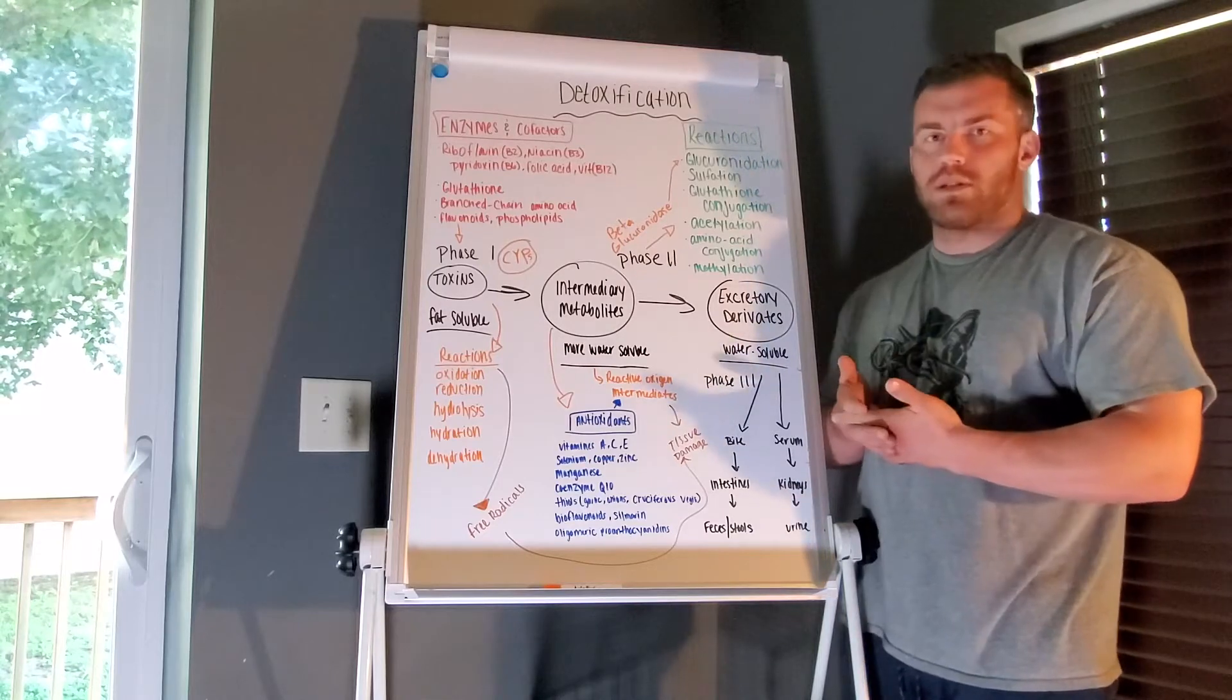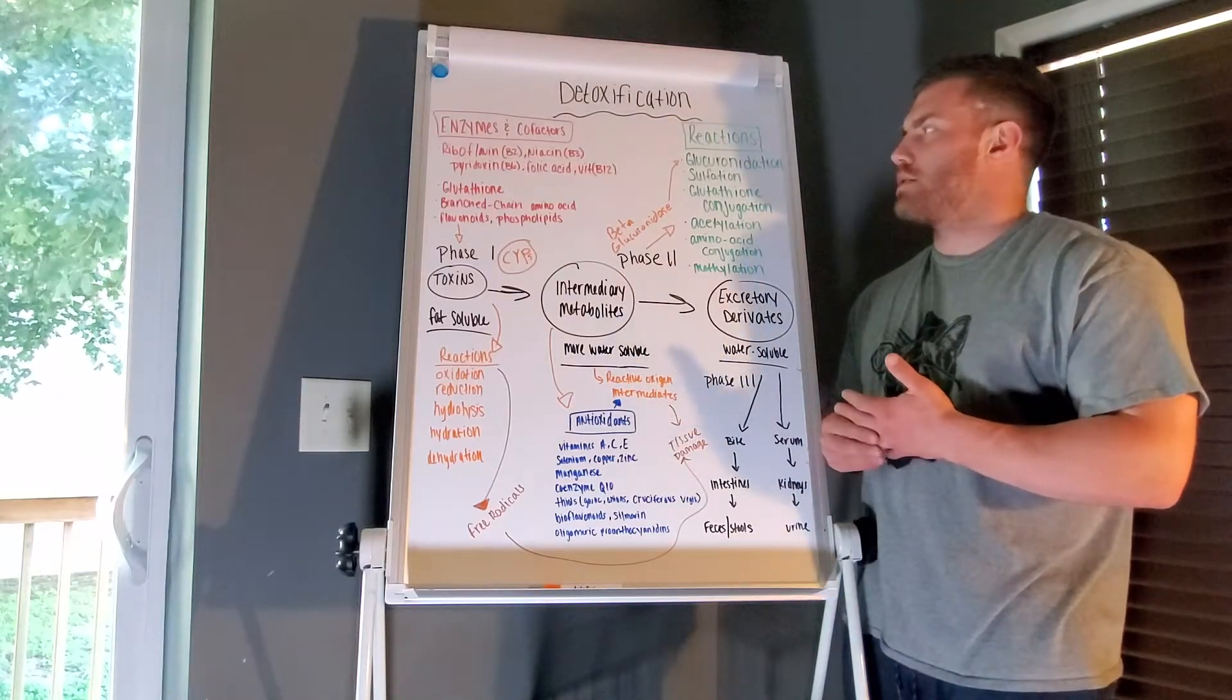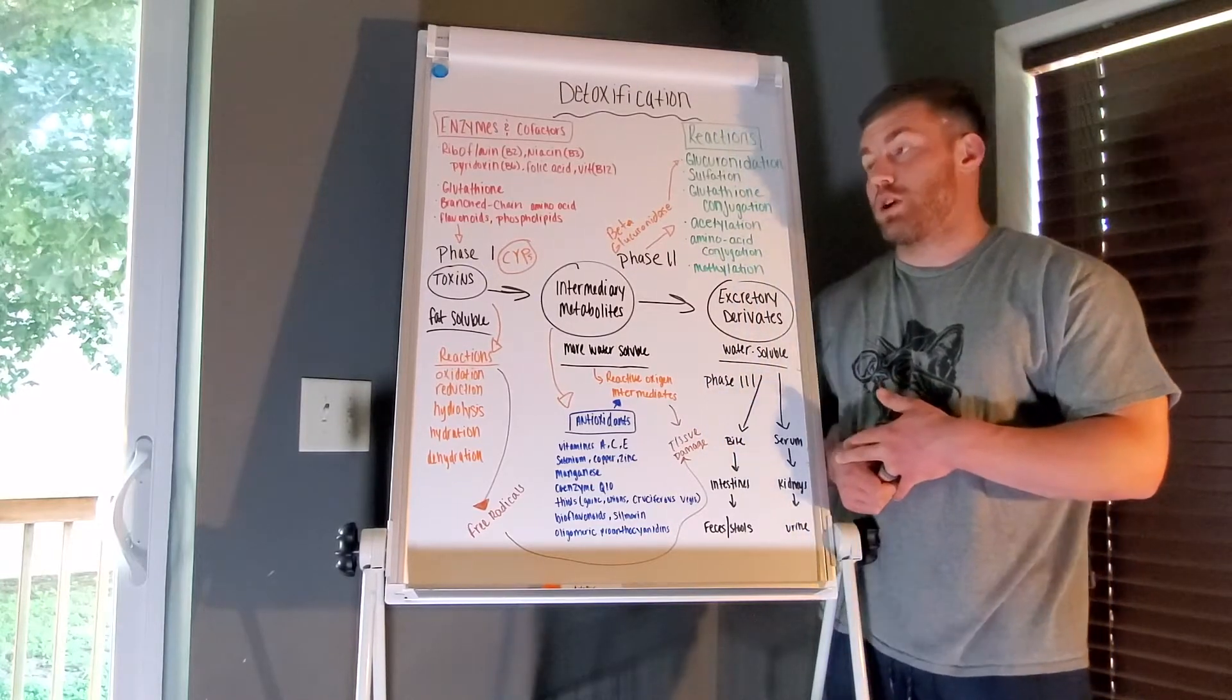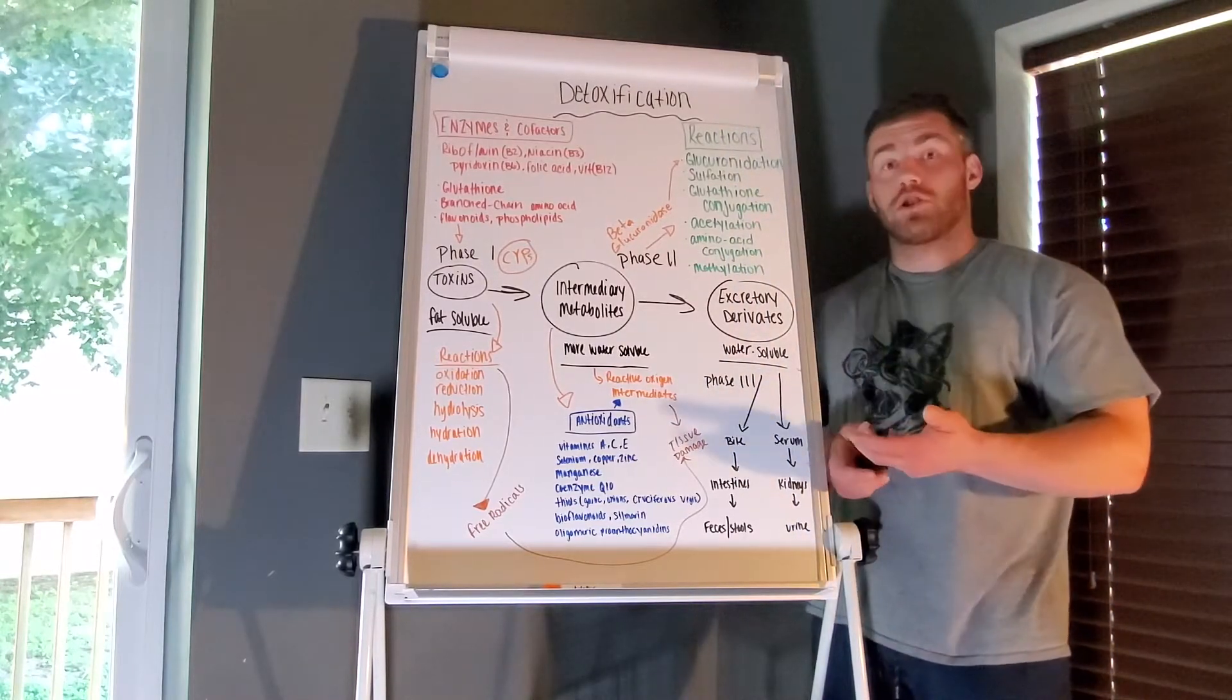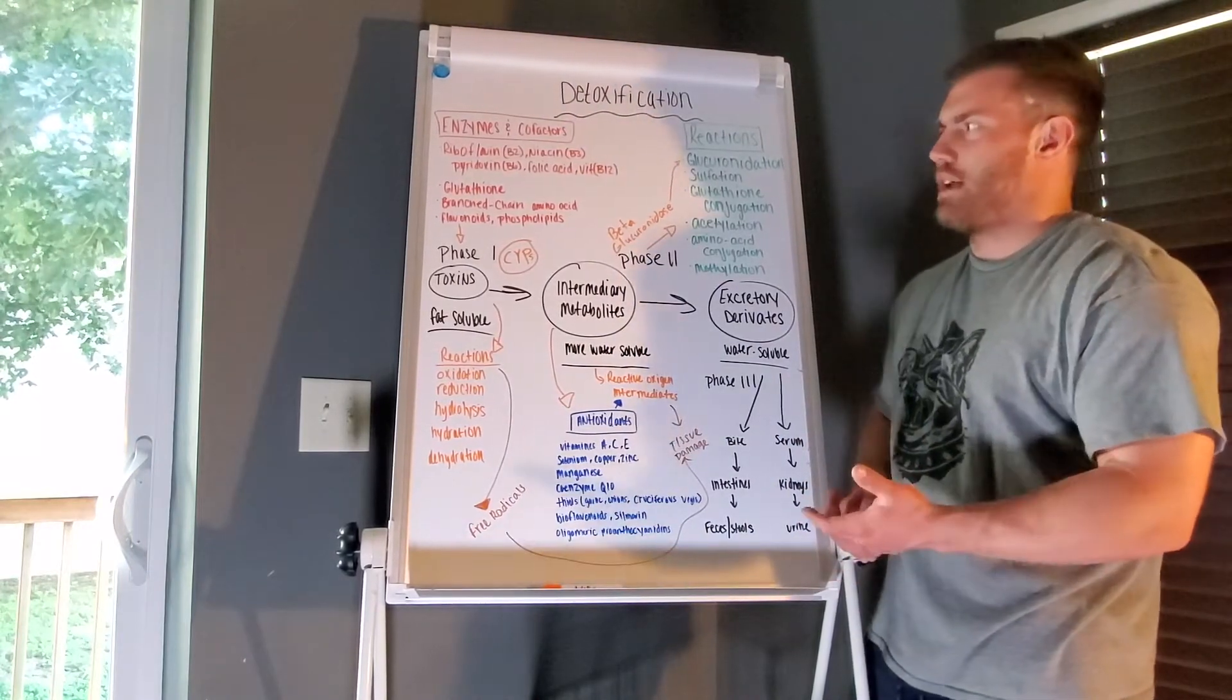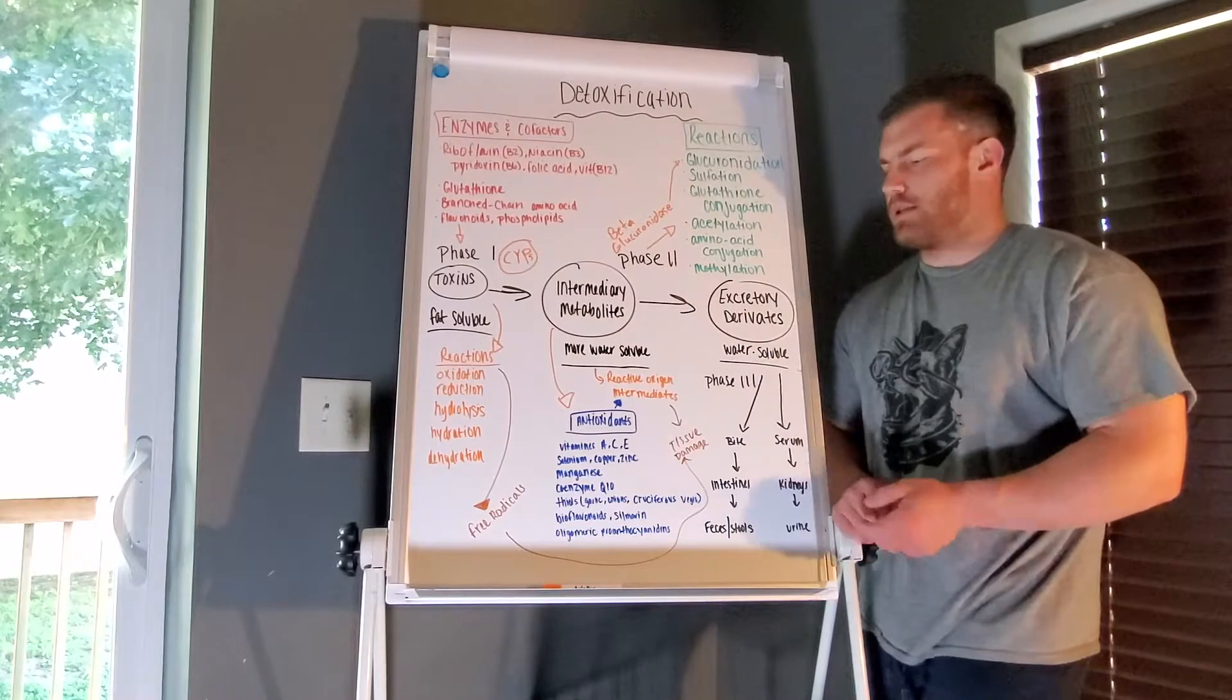I want to go through just some of the basic points of the process, kind of an overview, some important things, and relate them to stuff we generally talk about in functional medicine. The process is very complex and long with a lot of steps, so I just want to hit on a lot of the main points.